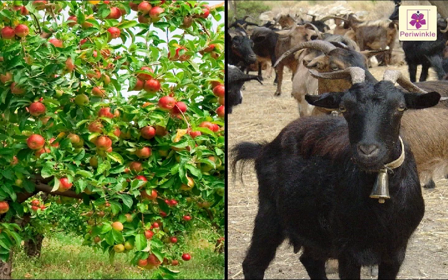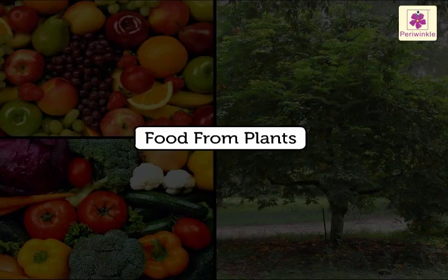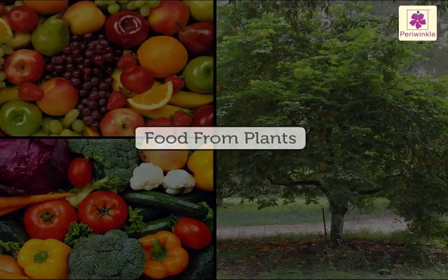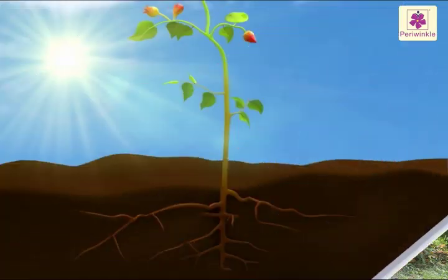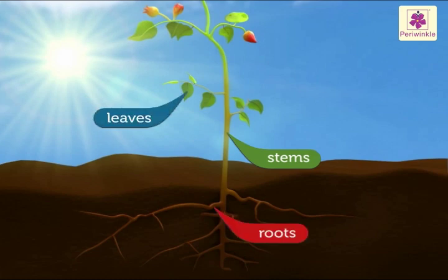Food comes from different sources like plants and animals. From plants, we get food from the stems, leaves, roots, and fruits of the plants.